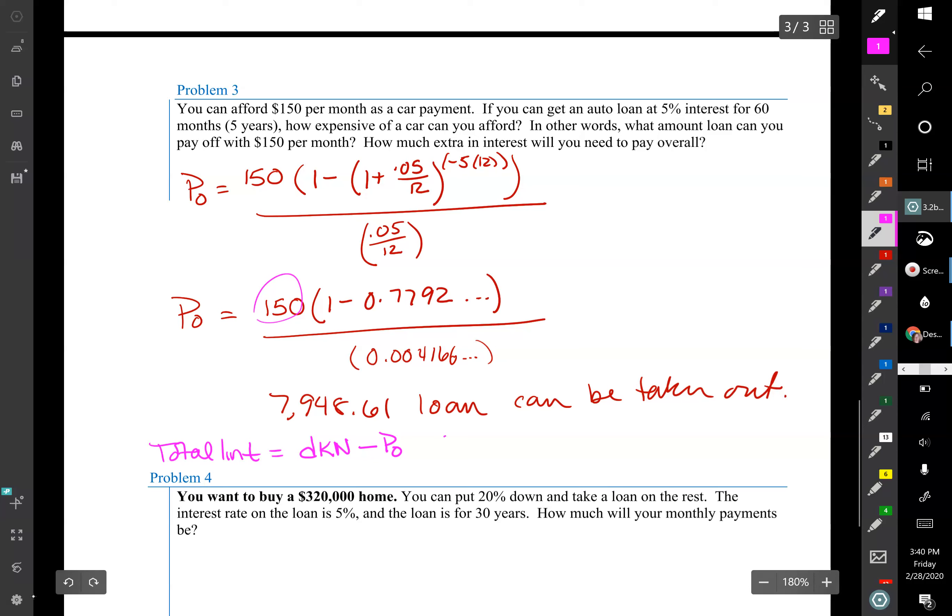So we would do the D times the K times the N minus P sub 0. So in this case, we're going to get the interest equal to 150 times 60, the 5 times 12, minus our $7,948.61. And in interest I will get $1,051.39 in interest.